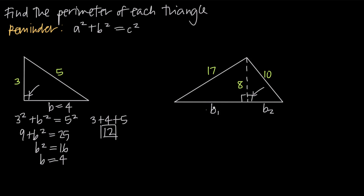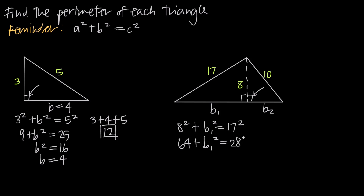We'll say that one leg is going to be eight, so A is equal to eight. So we'll say eight squared plus B sub one squared is going to be equal to the length of the hypotenuse squared, so 17 squared. When we simplify, we'll get 64 plus B sub one squared is equal to 289.